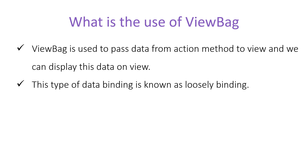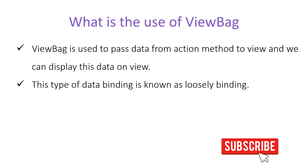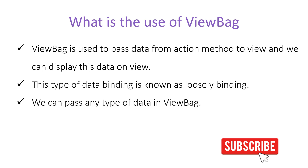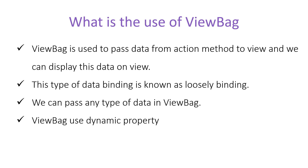We are talking about the binding of data with a view. When displaying data on a particular view, there are two modes: loosely binding and strongly binding. If you are using ViewBag, we say we are using loosely binding. If you are displaying a list of books or details of a book (as in the previous video), that type of binding is known as strongly binding. ViewBag uses a dynamic property, which is why the binding is called loosely binding.